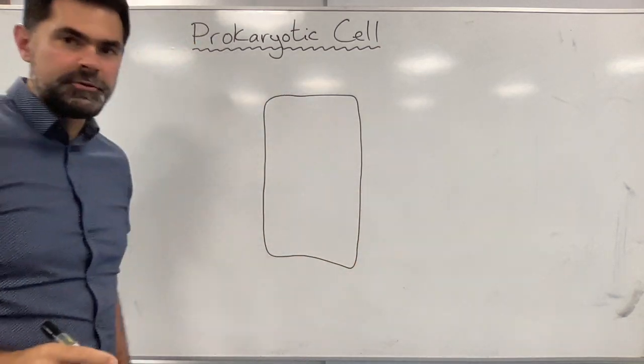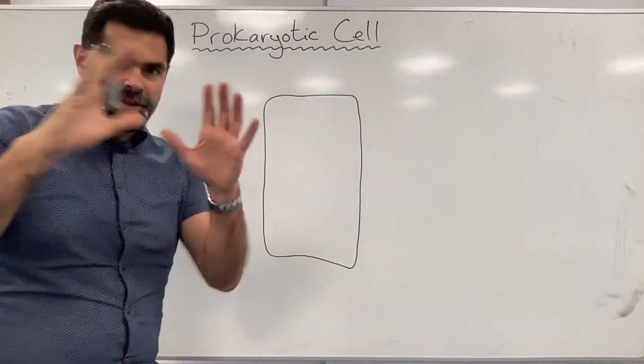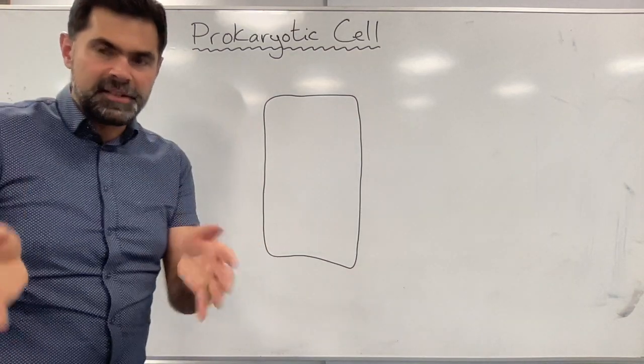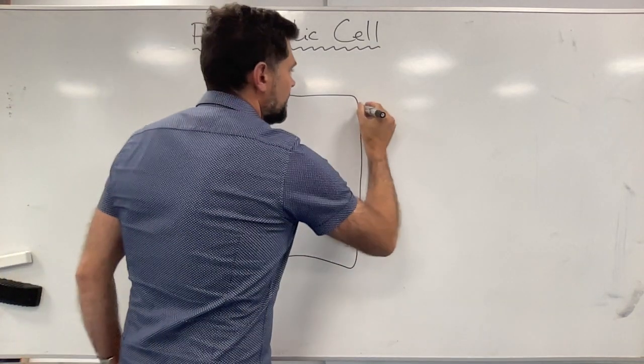I'm starting off by drawing the cell membrane. The cell membrane is just a thin layer that surrounds the cell and it controls what comes in and out of the cell.